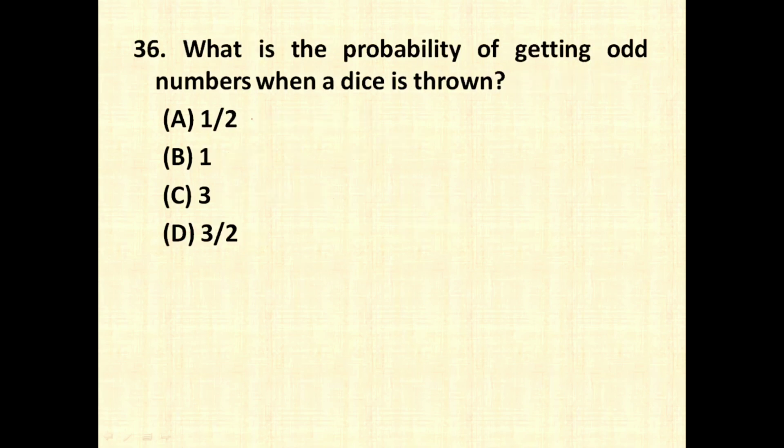What is the probability of getting odd numbers when a dice is thrown? In a dice, there are two types of numbers, odd numbers and even numbers. Odd numbers are 1, 3 and 5 and even numbers are 2, 4 and 6. Now let us see what is the probability of odd number. Total there are how many outcomes? In a dice when we throw, there are total 6 outcomes, 3 odd and 3 even. Now we want the possibility of odd number. So what is the chance of odd number? 1, 2 and 3. So 3 divided by 6 is nothing but 1 by 2. So the correct answer is option A, 1 by 2 is the probability of getting an odd number.